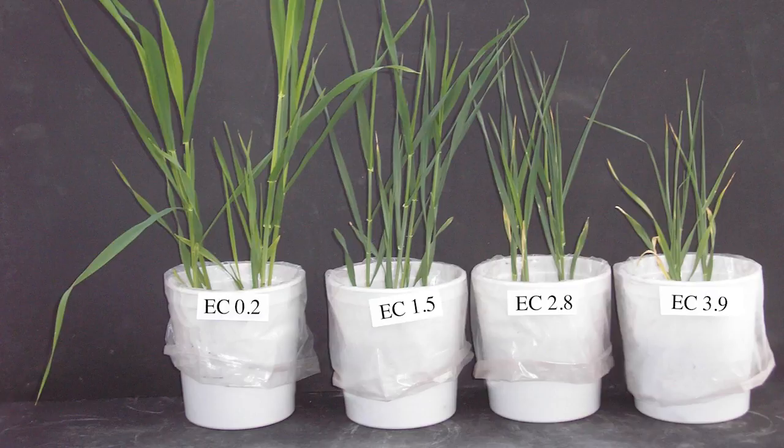Barley, on the other hand, is more tolerant of salts. Though the yields are reduced at an EC greater than 2, the plant is still growing.